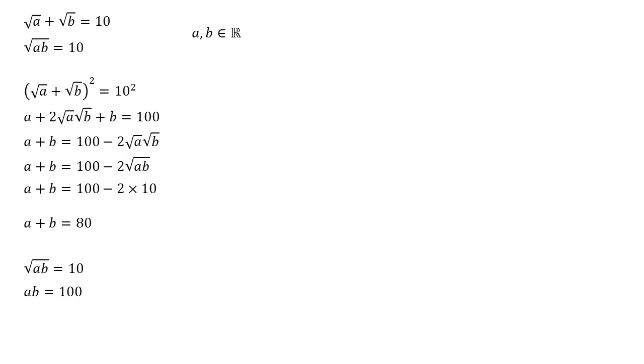So to do that, I'm going to rearrange this one that we've just found. So ab equals 100. Divide both sides by b, we get that a equals 100 over b. And we can now substitute this back into the a plus b equals 80 and find a solution.